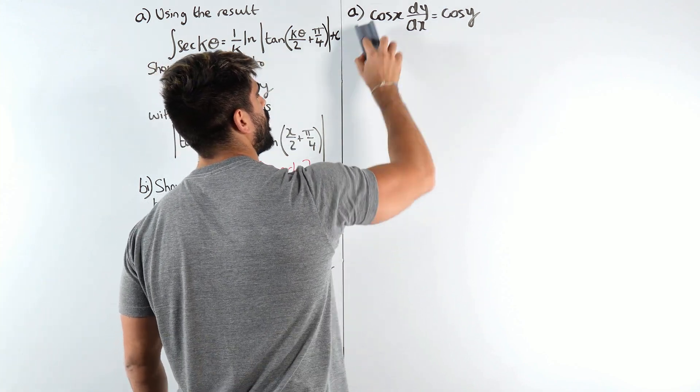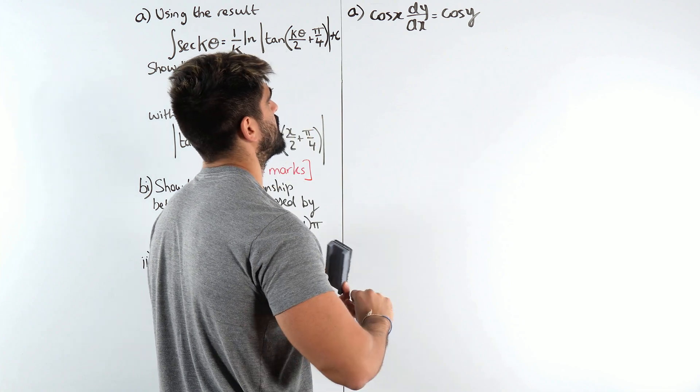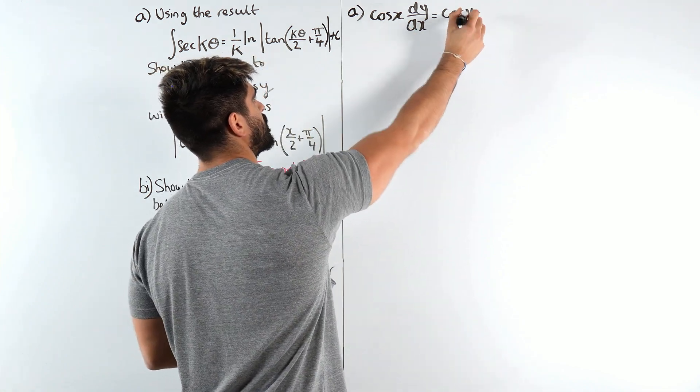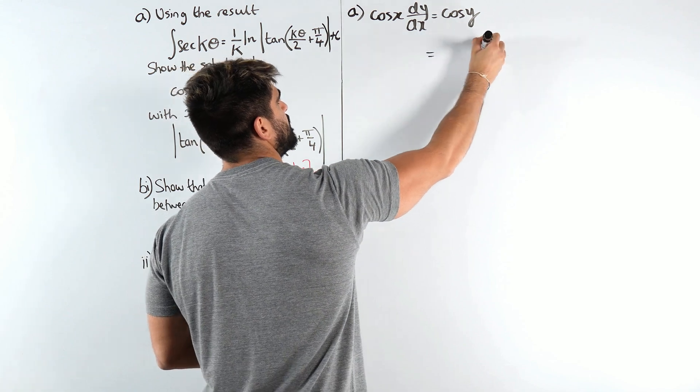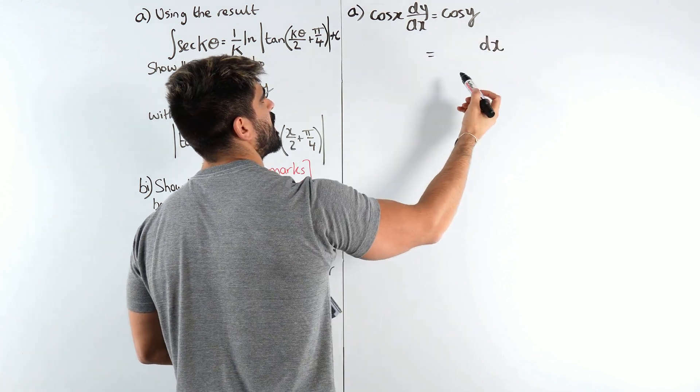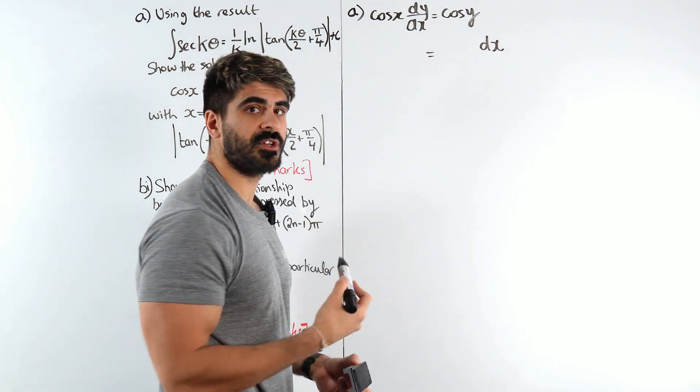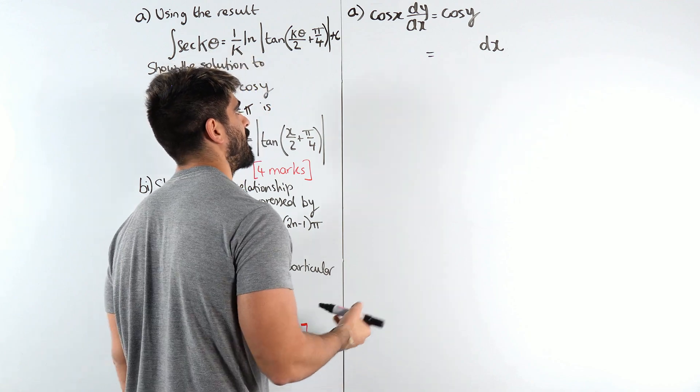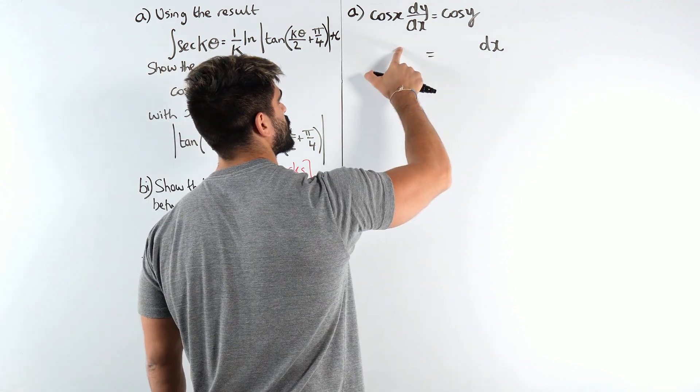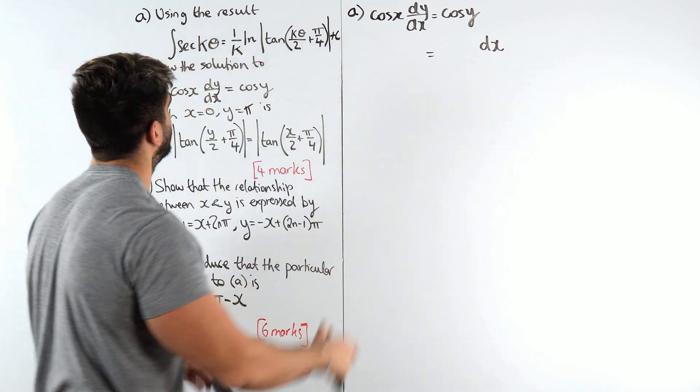We need to get all the y's to the left and all the x's to the right. So remember I have dx over here. Now how am I gonna do that? That cos y I'm gonna bring it to the left through division only. Multiplication division only for normal maths.